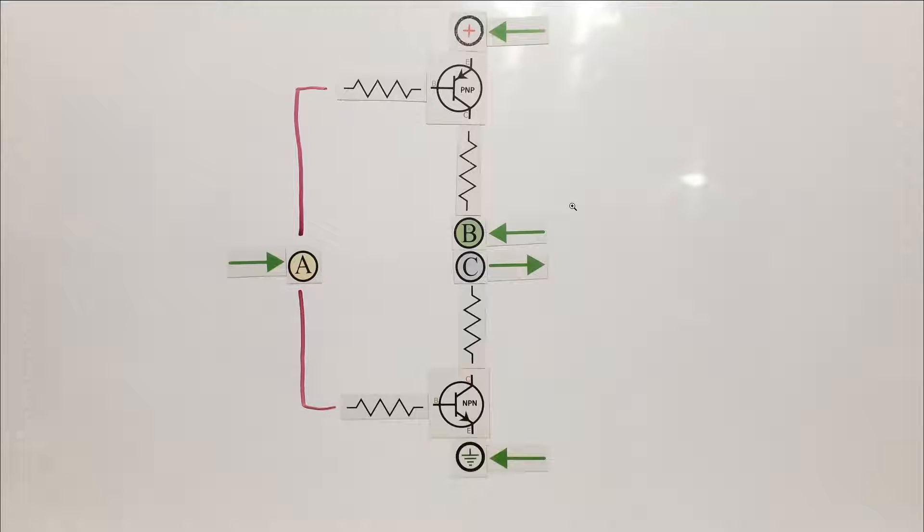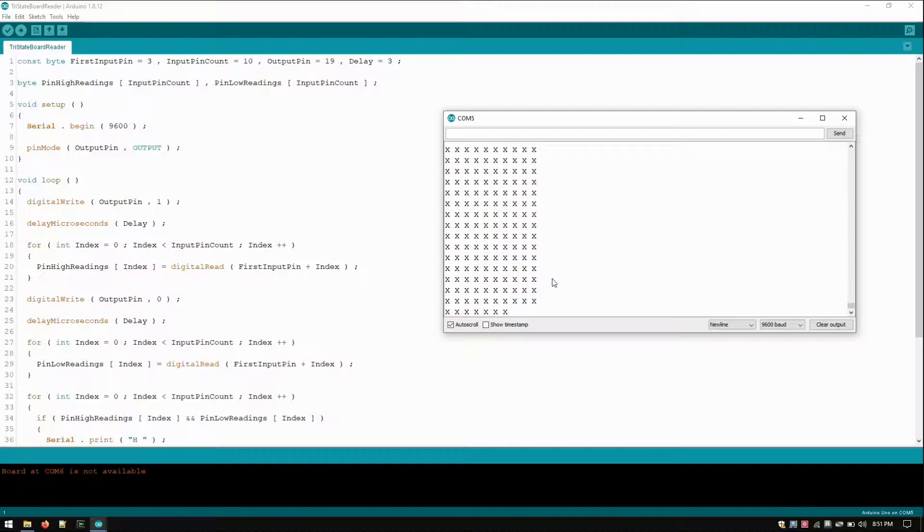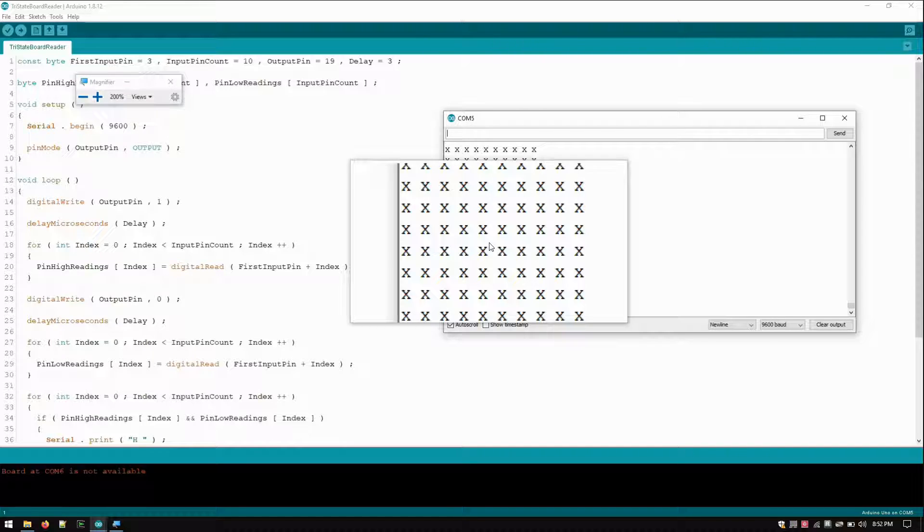So now I'm going to show you an Arduino demonstration of this in action. So here I have the program running and I've plugged it into the 10 pins. I'll zoom in a little so you can see. So here it's measuring the 10 pins in a sequence and X means floating.